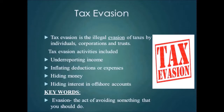If the taxpayer does not disclose an undisclosed amount but does so in the return of income filed in the previous year, a penalty of 20% of the undisclosed amount along with interest is levied. If the amount is undisclosed in the previous year, the minimum penalty that can be levied is 30% and the maximum is 90% of the amount the taxpayer has to pay.